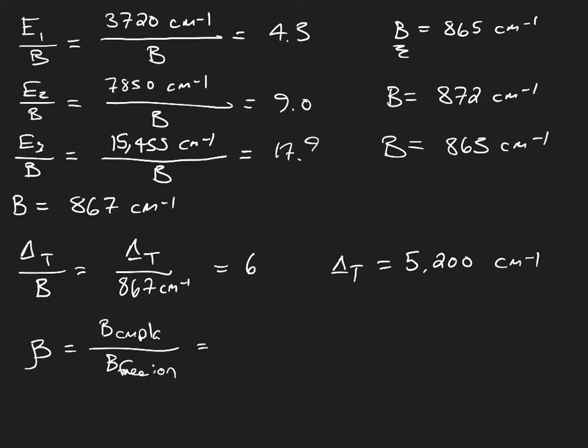We can calculate the parameter beta as B of the complex over B of the free ion, which is 867 wave numbers divided by 1,080 wave numbers, which is the B value for a free nickel 2+ ion. And that equals 0.803.